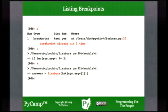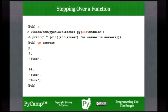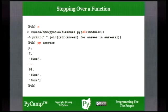Instead of walking through all the statements of the function with 's', we can use 'n' — next — which will step over the function: execute all the statements in it, return with a value, and proceed to the next statement in the program. So I don't have to single-step through functions if I know they're behaving correctly. Once I'm satisfied that the fizzbuzz function is working properly, I can use 'n' to step right over it.